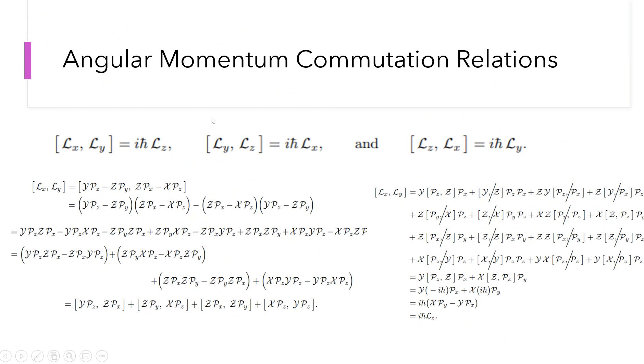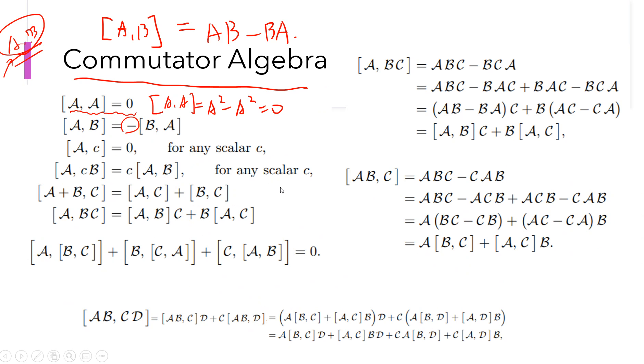And for any scalar c, then it's zero, because we are assuming that A is linear. So A c minus c A is just c, right? You can take c out.